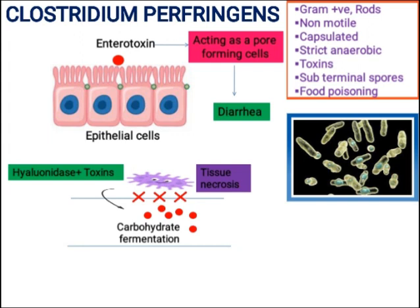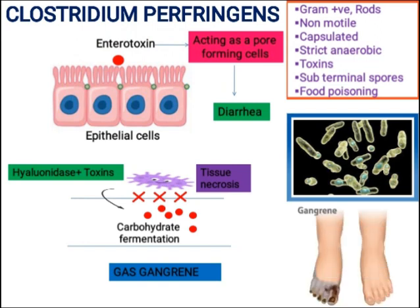The toxins cause fermentation activity and in the end gas is produced in the tissue. Two things happen: the bacteria's enzymes and toxins cause tissue necrosis and tissue damage, and carbohydrate fermentation in the tissue produces gas. Due to tissue damage and gas production, we call this condition gas gangrene. In gas gangrene the affected area turns completely black.